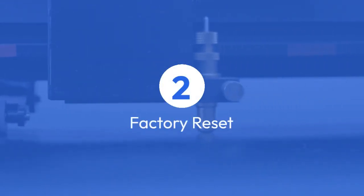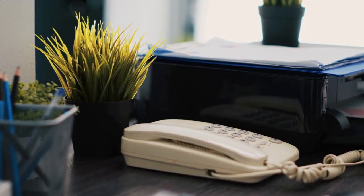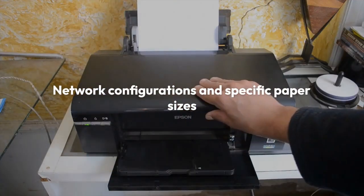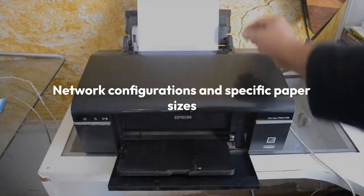2. If a power cycle doesn't work, you might need to perform a factory reset. This will erase all your custom settings, so make sure you're okay with losing things like network configurations or specific paper sizes before proceeding.